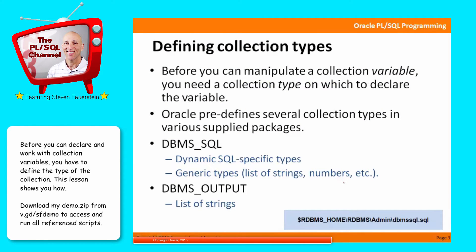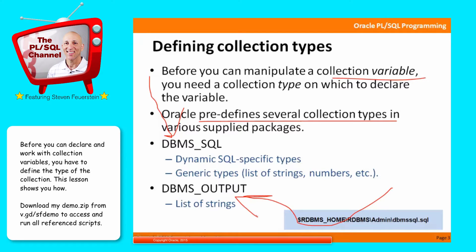So in this lesson, we're going to talk about defining collection types, because when you work with a collection, you're actually working with a variable, and since it's a variable, you have to define the type on which it's declared. The collection type has to be defined before you can work with a collection of that type. Oracle offers several predefined collection types that you can use in your own code. Most prominently would be the collection types in DBMS_SQL and in DBMS_OUTPUT, which include a series of standard collection types like a list of strings or a list of numbers.